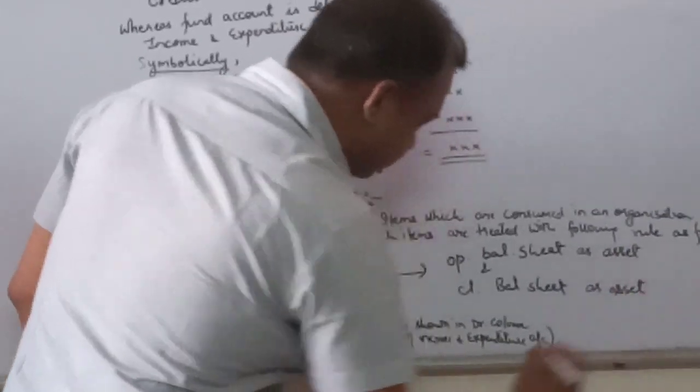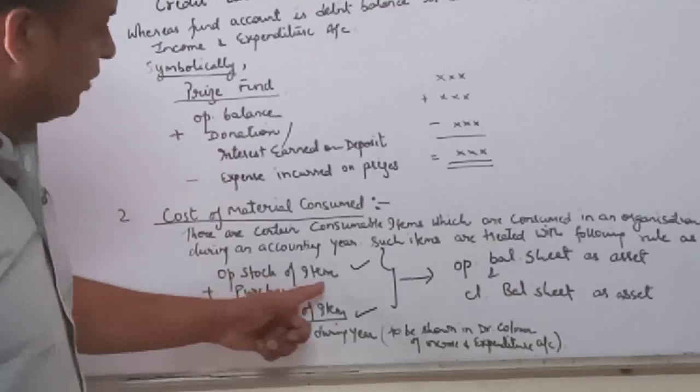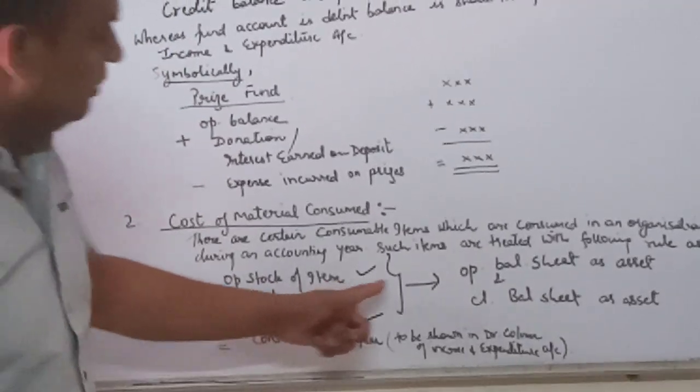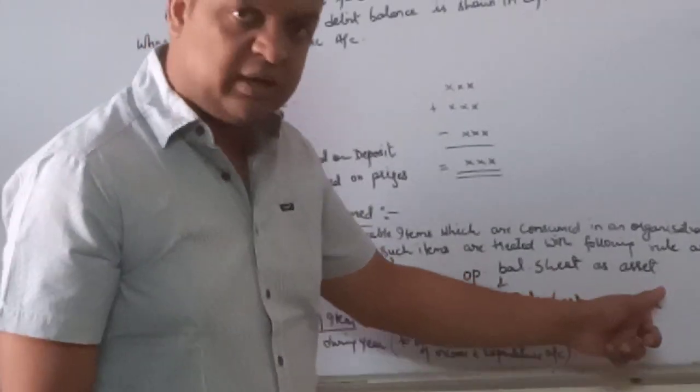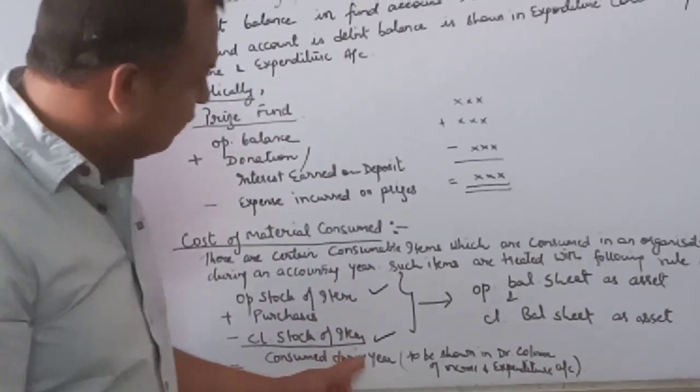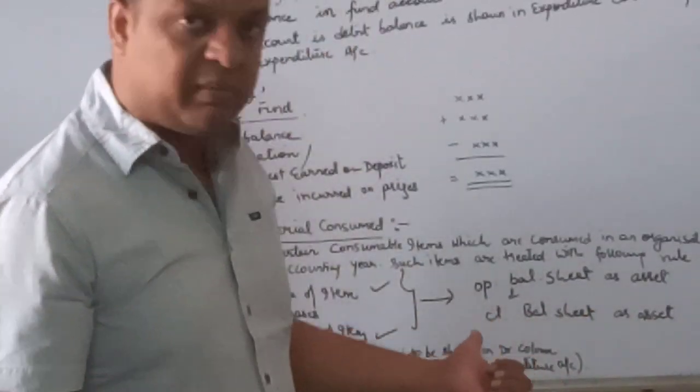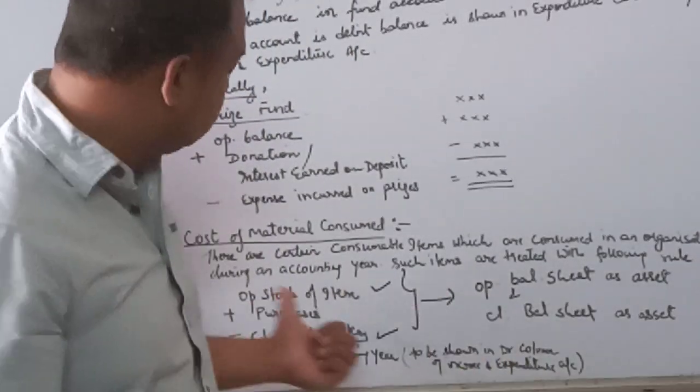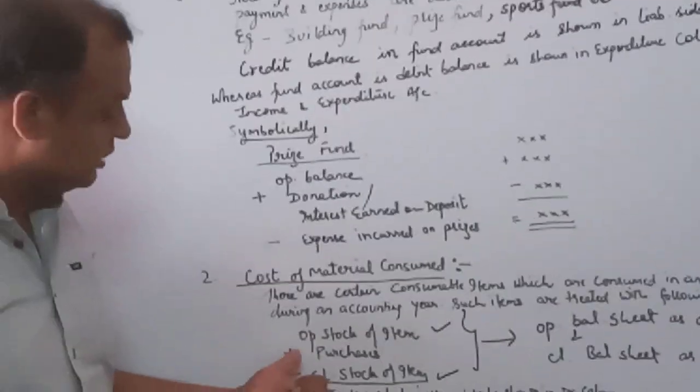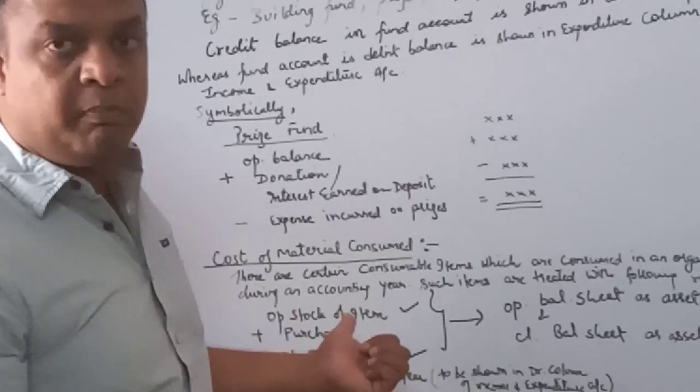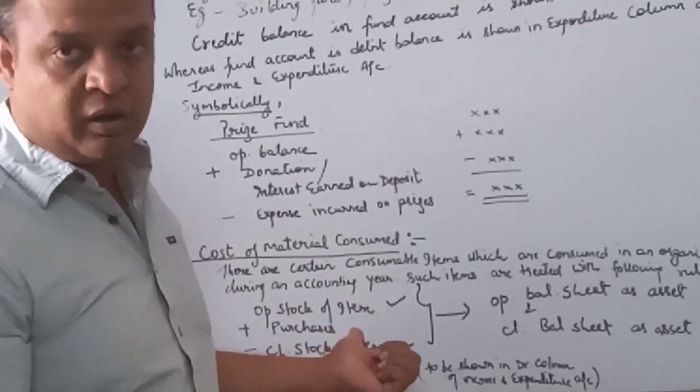It means the opening balance of an item will be shown in the opening balance on the asset side, and the closing balance of an item will be shown in the asset column in the closing balance sheet. These are the additional information which will be given in the question below the receipt and payment account.